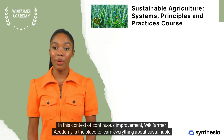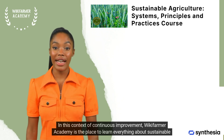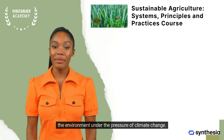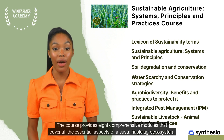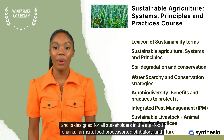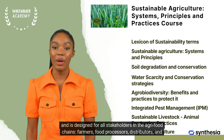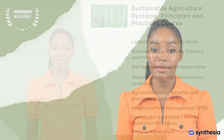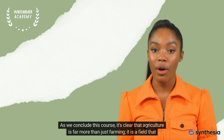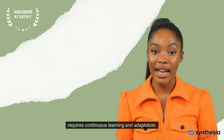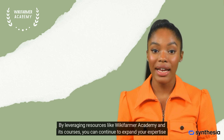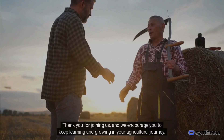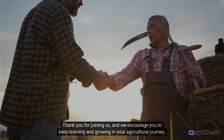Wikifarmer Academy is the place to learn everything about sustainable agricultural practices and how to implement them in your field to increase yields without harming the environment under the pressure of climate change. The course provides eight comprehensive modules covering all essential aspects of a sustainable agro-ecosystem, designed for all stakeholders in agri-food chains — farmers, food processors, distributors, and consumers. As we conclude, agriculture is far more than just farming; it is a field requiring continuous learning and adaptation. Thank you for joining us, and we encourage you to keep learning and growing in your agricultural journey.